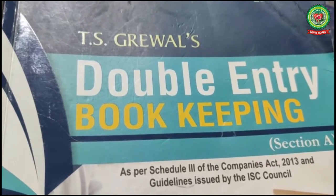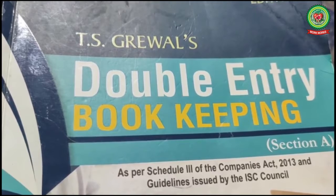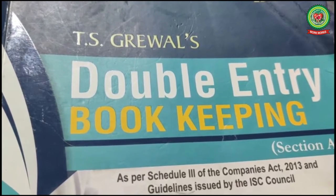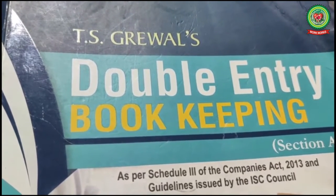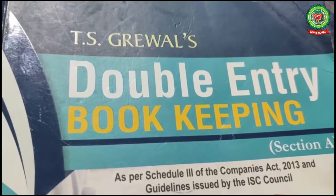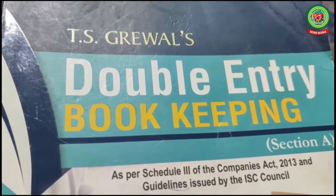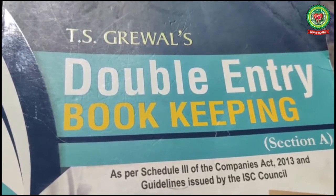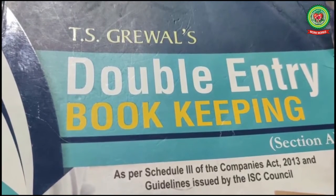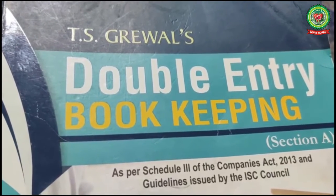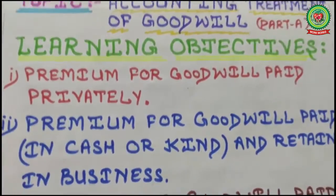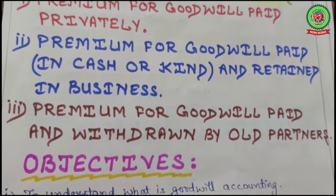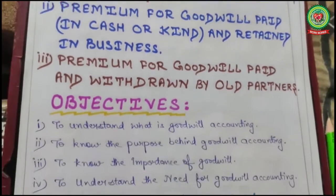Good morning students, it's time for your accounts class. We started chapter number three, Admission of a Partner. The meaning of admission of a partner is when a new person becomes a partner in the firm. Yesterday I discussed accounting treatment of goodwill — a lengthier topic divided into two lectures. Yesterday I covered: premium for goodwill paid privately, premium for goodwill paid in cash or kind, and premium for goodwill paid and withdrawn by old partners.